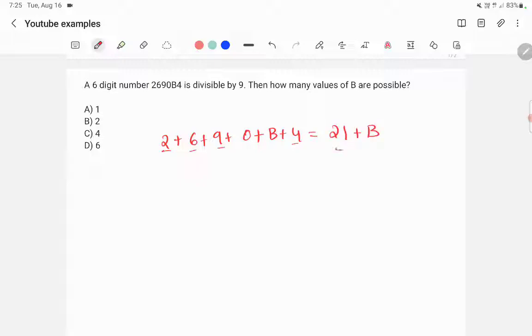So 21 plus B. We know that the multiples of 9 are 18, 27, then 36, etc. So 21 plus B will be either of these numbers.